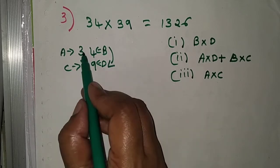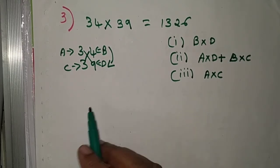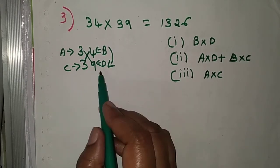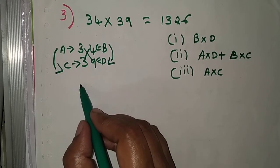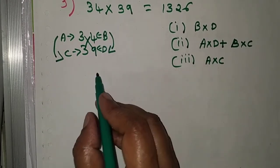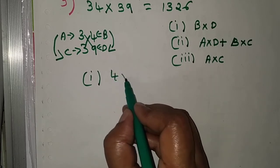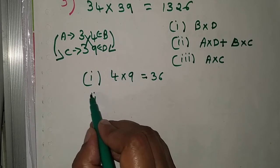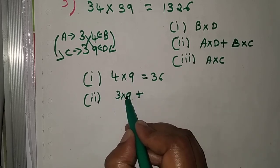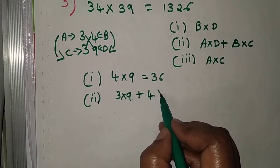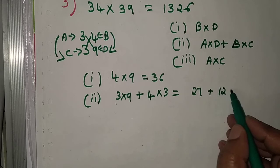First step: B into D is 4 into 9, equal to 36. Second step: A into D plus B into C is 3 into 9 plus 4 into 3, which is 27 plus 12, equal to 39. Third step: A into C is 3 into 3, equal to 9.